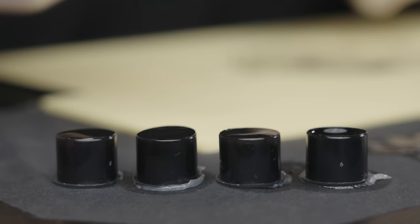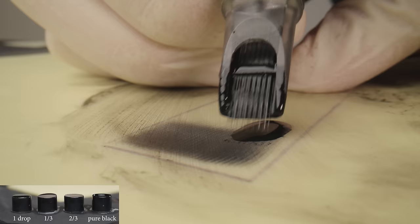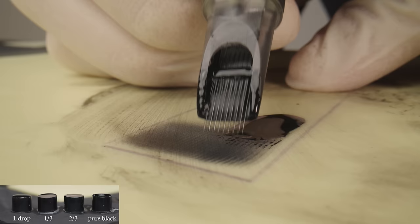By first dipping my needle into the darkest ink cap and then into a slightly lighter one, I get a tone in between. This way I can mix a different shade directly in the needle module, which is why 4 ink caps are sufficient for me.